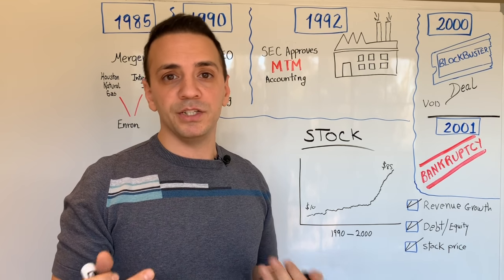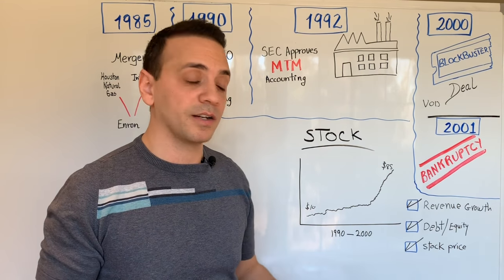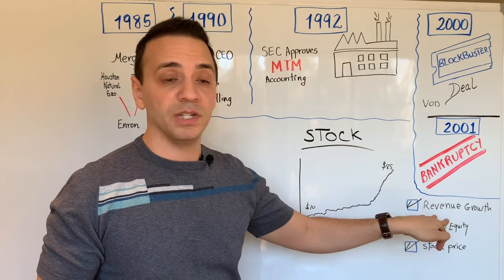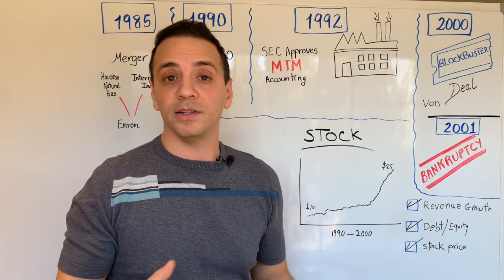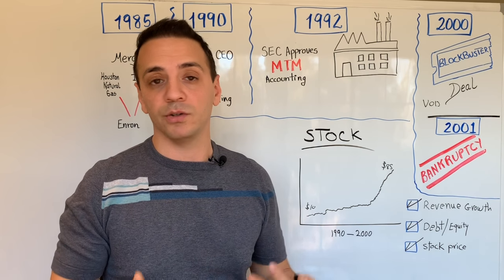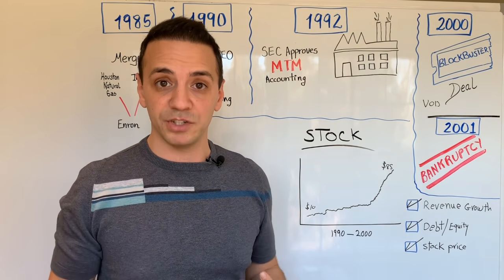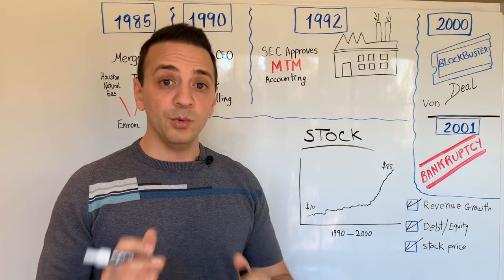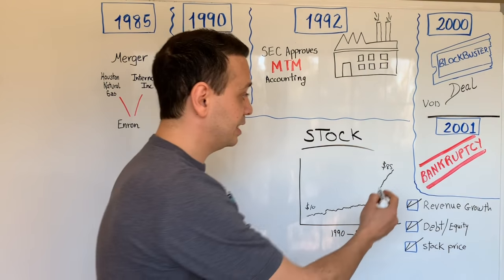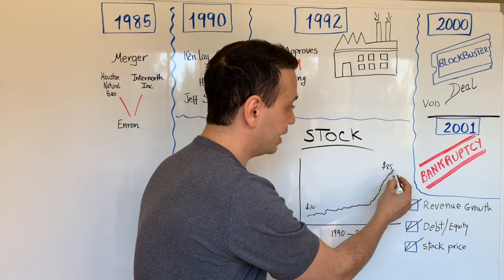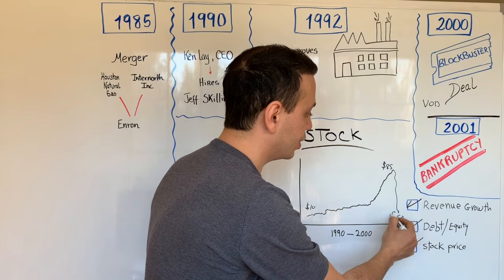Because so many people, institutions, and pension funds were invested in the stock, the fallout from Enron's bankruptcy in 2001 had a huge effect on Wall Street. A lot of people lost their pensions and retirement funds — it was a bad situation for many people. After Enron declared bankruptcy in 2001, the stock went from $85–$88 a share all the way down to about 50 cents per share.